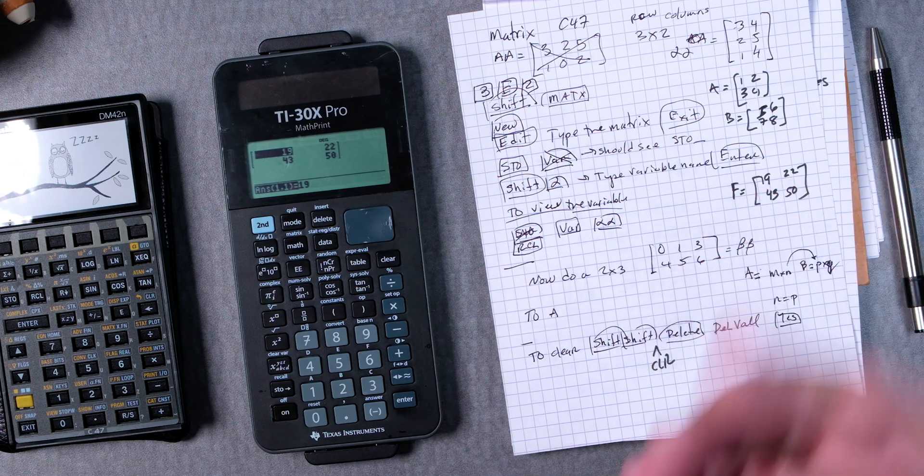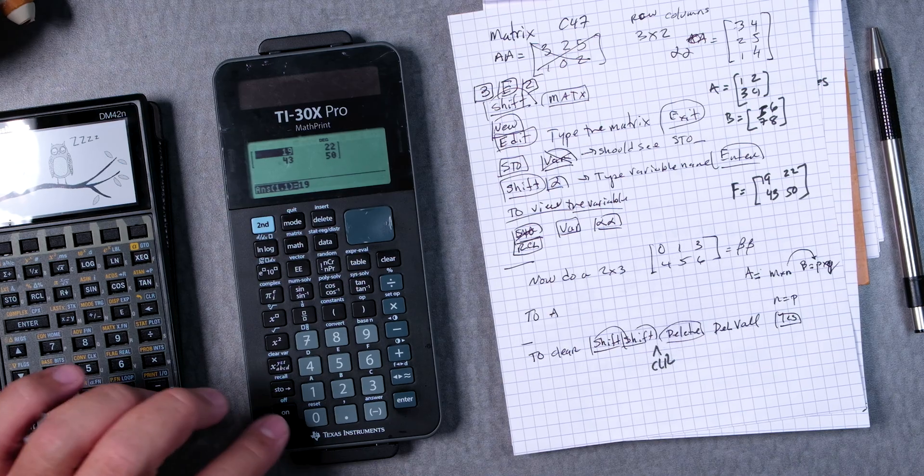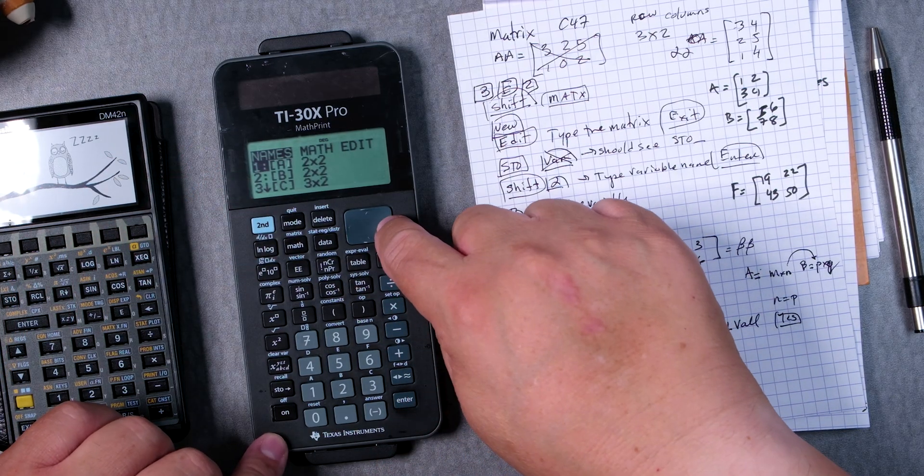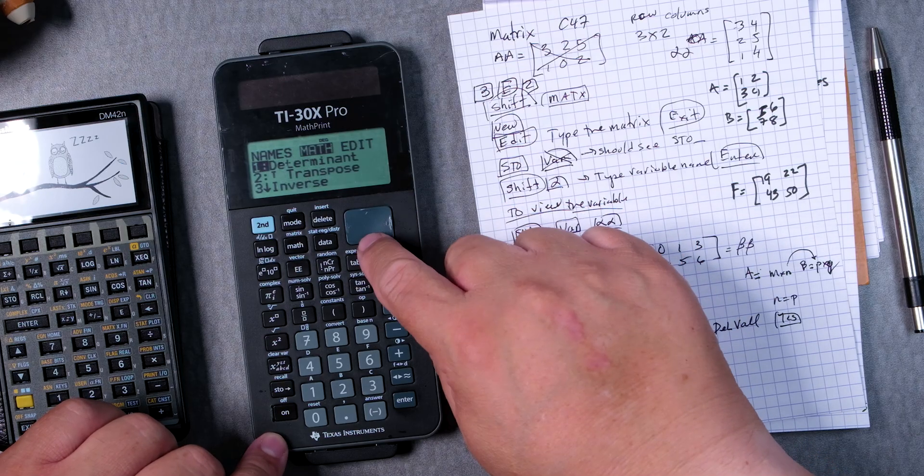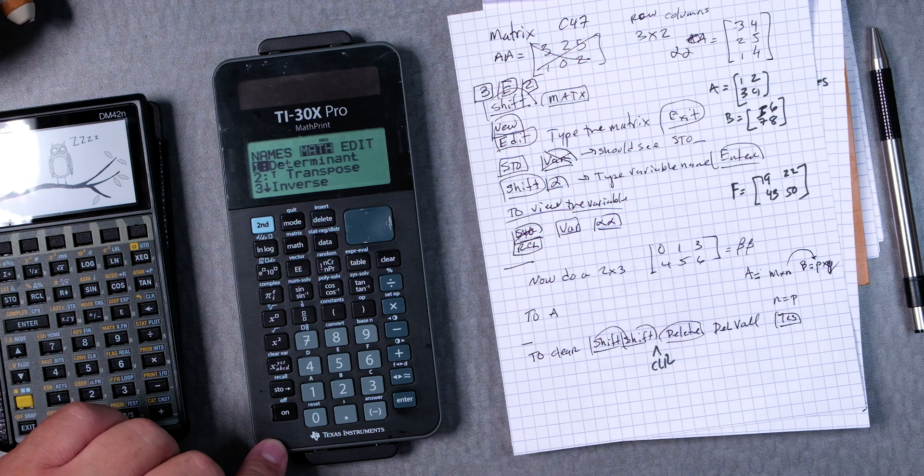We used two by two matrices, two of them, utilizing the TI-30X Pro math print. There are other features that you might have seen right here. If you move over, you see math, determinant, transpose, inverse, and so forth. So you'll be able to utilize those if you need.